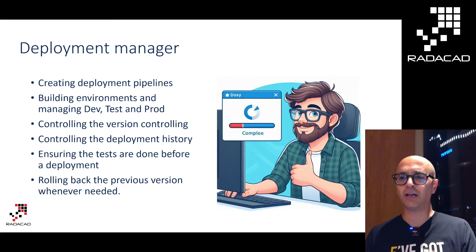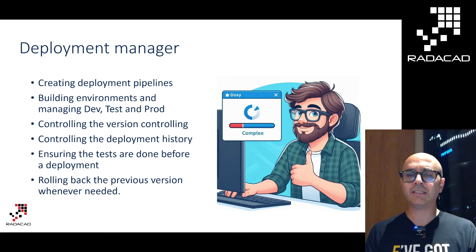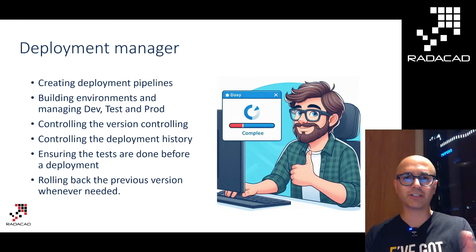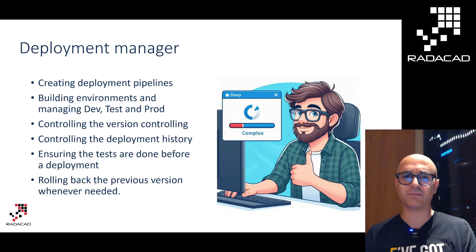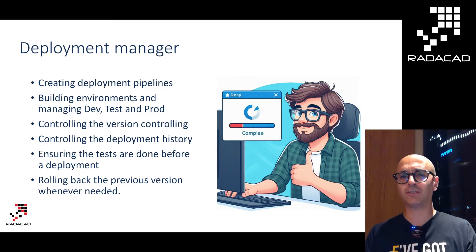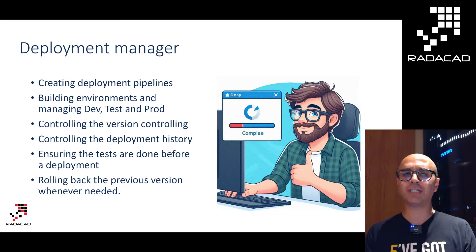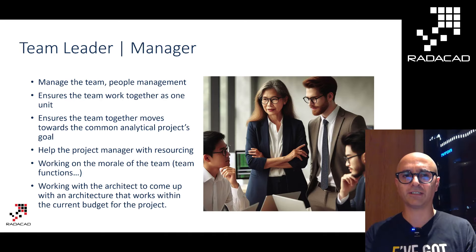The deployment manager controls what goes live to end users and what is still in progress, and manages the dev, test, UAT, and production environments, as well as deployment pipelines from one environment to another. This role might be combined with the administrator role. The deployment manager works closely with the tester and the rest of the development team to make sure the right content goes to live or production.